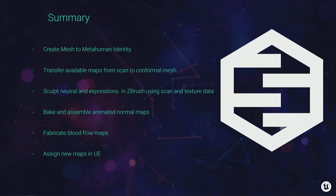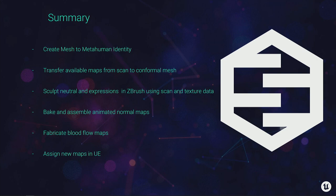Here's a brief summary of what we are going to go through today. There is some theory before this, but we are basically going to create the MetaHuman identity, then use the maps from the scan to transfer that to the low-poly topology and UV space of that low-poly mesh. Then we are going to redo the ZBrush sculpts both for neutral and the expressions, bake out all the normal maps from that, and then use the normal maps to fabricate the blood flow maps. We have only one input, which is a scan for the neutral, so pretty much everything else needs to be invented. Finally, we are going to test that out in Unreal Engine to see how it plays out.